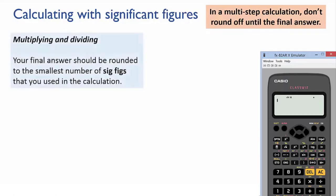Here are the rules. When you're multiplying or dividing, look for the number that you've used that has the least number of sig figs. You should then round your final answer to that number of sig figs.